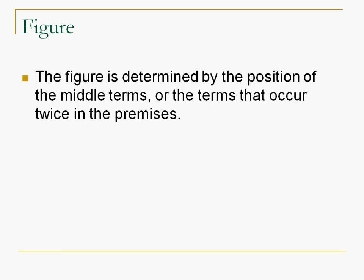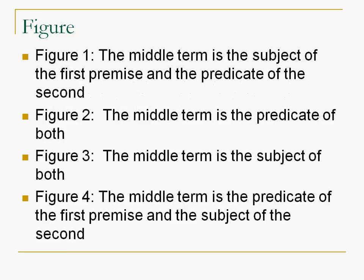The figure is determined by the position of the middle terms, or the terms that occur twice in the premises. Now this is the bad way to figure out figure. Figure 1, the middle term is the subject of the first premise and the predicate of the second. Figure 2, the middle term is the predicate of both. Figure 3, the middle term is the subject of both. Figure 4, the middle term is the predicate of the first and the subject of the second. You don't want to be carrying this around all the time, so what I'm going to do is refer you to our textbook.